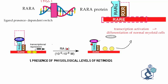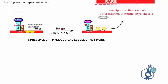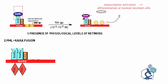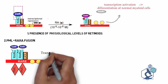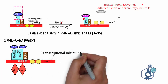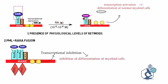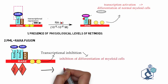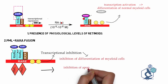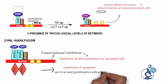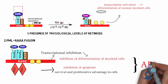The PML-RARA fusion protein not only recruits repressors on RARA causing transcriptional inhibition, but also inhibits differentiation of myeloid cells. This fusion also inhibits PML activity, thereby inhibiting apoptosis and giving survival and proliferative advantage to cells. All these genetic events give rise to APML.